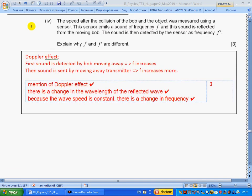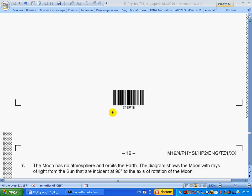Part c: The speed at the collision of the bob and the object was measured using a sensor. This sensor emits a sound of frequency f, and this sound is reflected from the moving bob. The sound is then detected by the sensor as frequency f prime. Explain why f and f prime are different. Doppler effect takes place. First, sound is detected by the bob moving away, so frequency increases. Then sound is sent by the moving away transmitter bob—frequency increases more. In the mark scheme, we have mention of Doppler effect, so you should write Doppler. There is a change in the wavelengths because the wave speed is constant, there is a change in frequency.